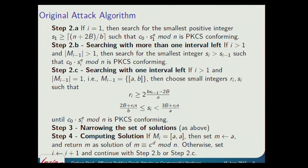This is the original attack algorithm. There's a loop where I find more and more S values — each time in one of three different ways. Once I've got an S, I narrow the solutions using the formula I showed before. When I've only got one interval left, I give that as the output — that's the real value of M. Otherwise, I go back and look for more S values.